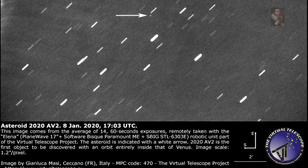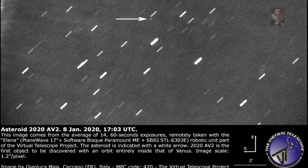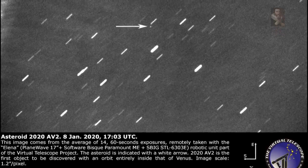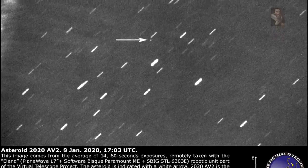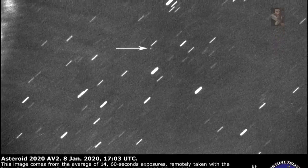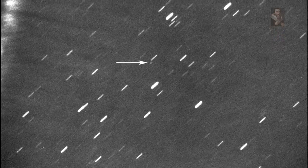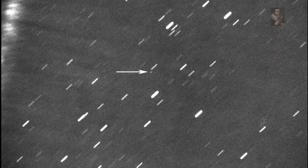Masi and the team at Minor Planet Center also confirmed that 2020AV2's orbit was completely inside Venus's orbit, the only known such asteroid. He notes that it also has the smallest known aphelion distance in the solar system other than Mercury.